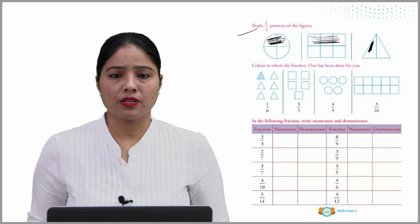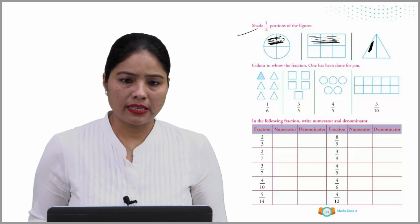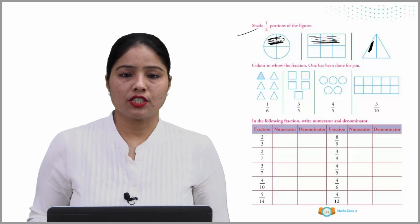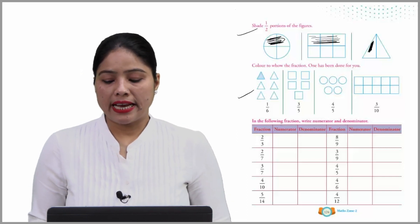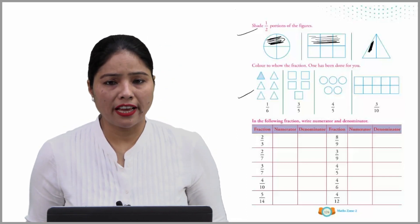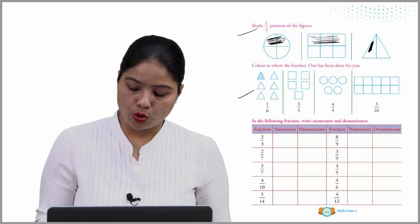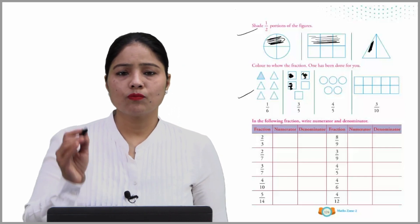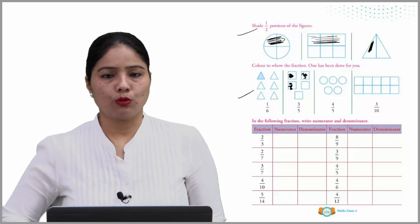Color to show the fraction — one has been done for you. अब इन्होंने कहा है कि ये जो हमारे six triangles हैं, ये क्या show कर रहे हैं? ये show कर रहे हैं six का one part — तो ये तो already done है. Now move on — three upon five means these pictures are five figures. So, five में से now you have to color three objects. One, two, and three — you can choose any three. So, we can say that it is three by five. Similarly, you have to fill the other one also.